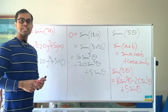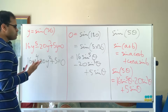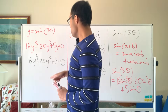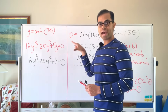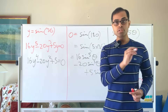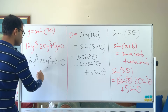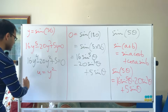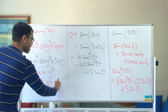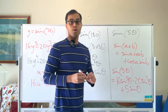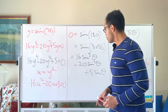It's a fourth degree equation, but there's a beautiful trick: there are no coefficients of y³ or y, so it's actually a quadratic in y². We substitute u = y², and the equation becomes 16u² − 20u + 5 = 0. Now we've got a quadratic, and we can solve for u and then find y.